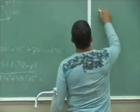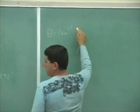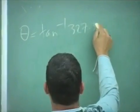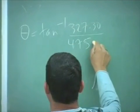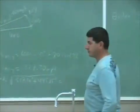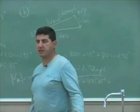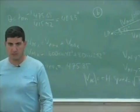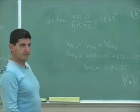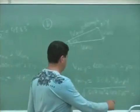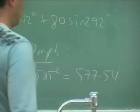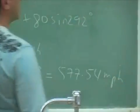And then the angle is tangent inverse of 327 over 475.85. And the angle should come out to be less than 42. So tell me what you get there. 0.54 and the angle.